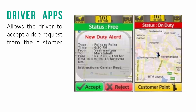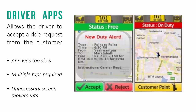Problems were noticed: one was that the app was too slow, the second was that multiple taps were required, and the third was that there were unnecessary screen movements. These problems are critical for a taxi booking service because this is about real-time demand. The faster you can service your customers, the more bookings a driver can do. Fixing this problem is very crucial for a service like Taxi for Shore.